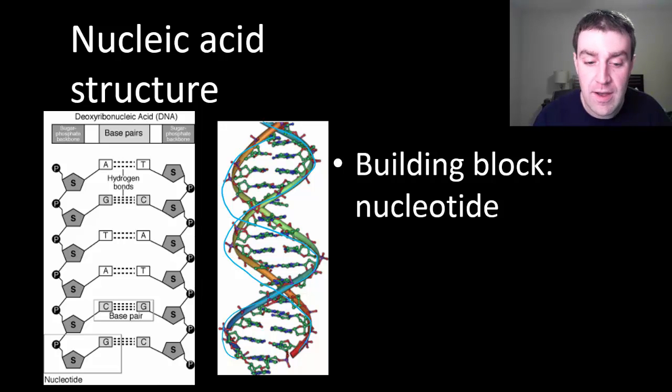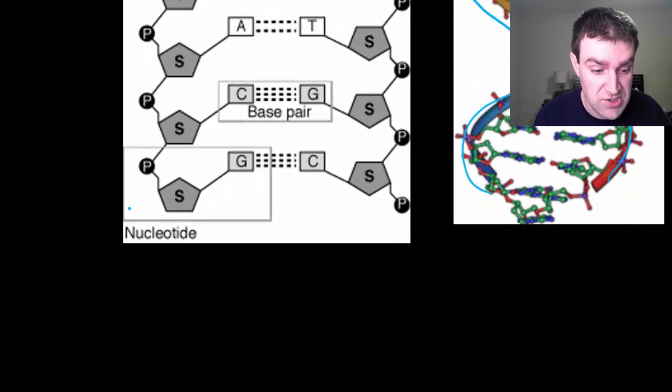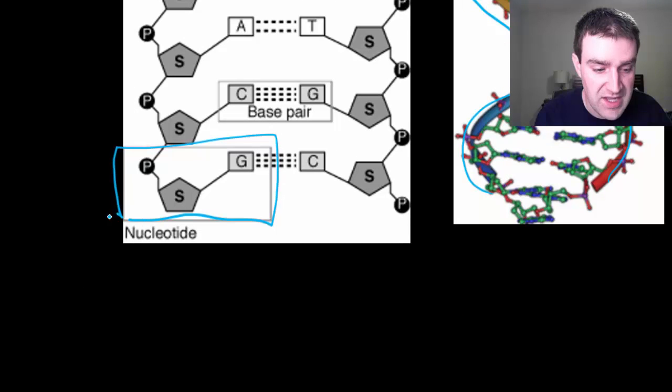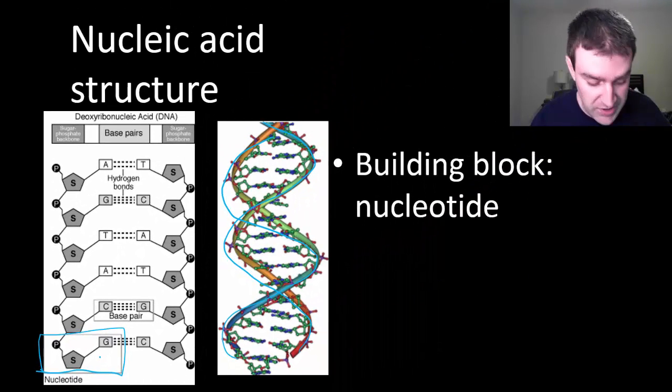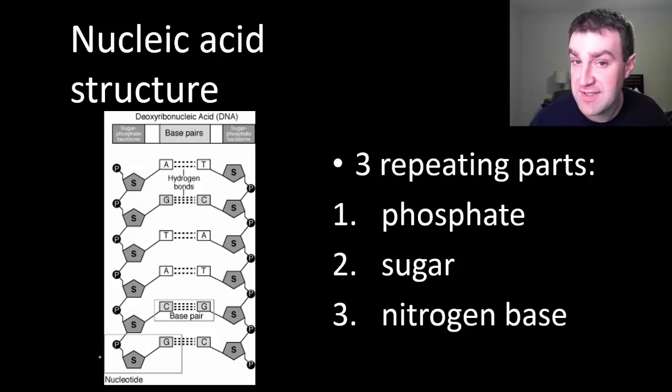If we were to zoom in more into what the DNA was made of, we kind of studied this a little bit before too. The basic repeating unit is called a nucleotide, and a nucleotide has three basic pieces to it: a phosphate, a sugar, and a nitrogen base.